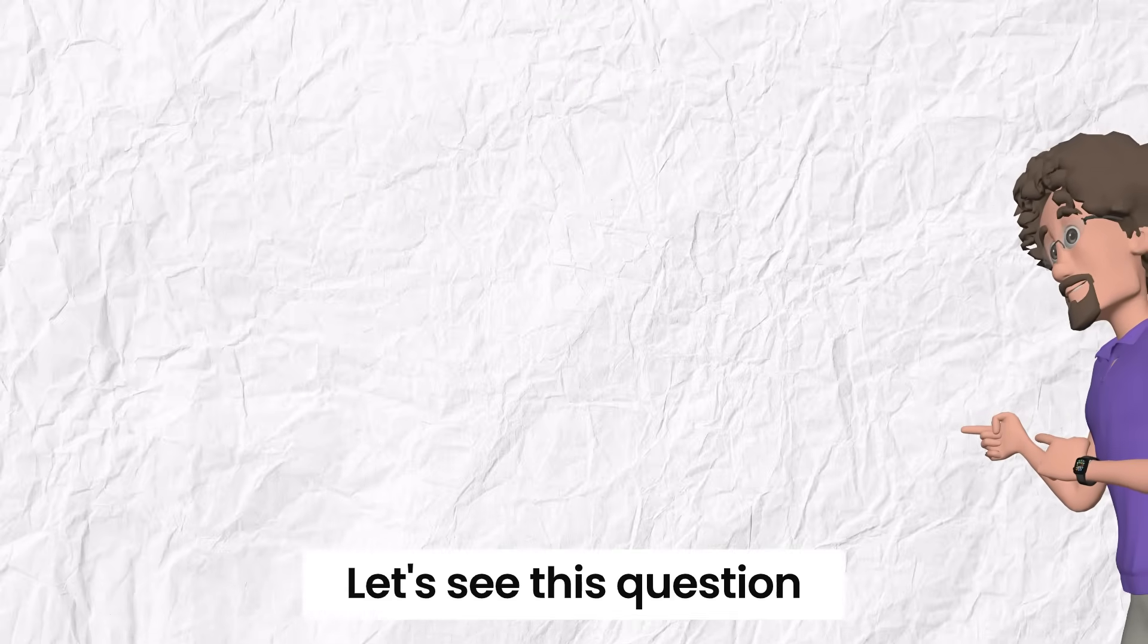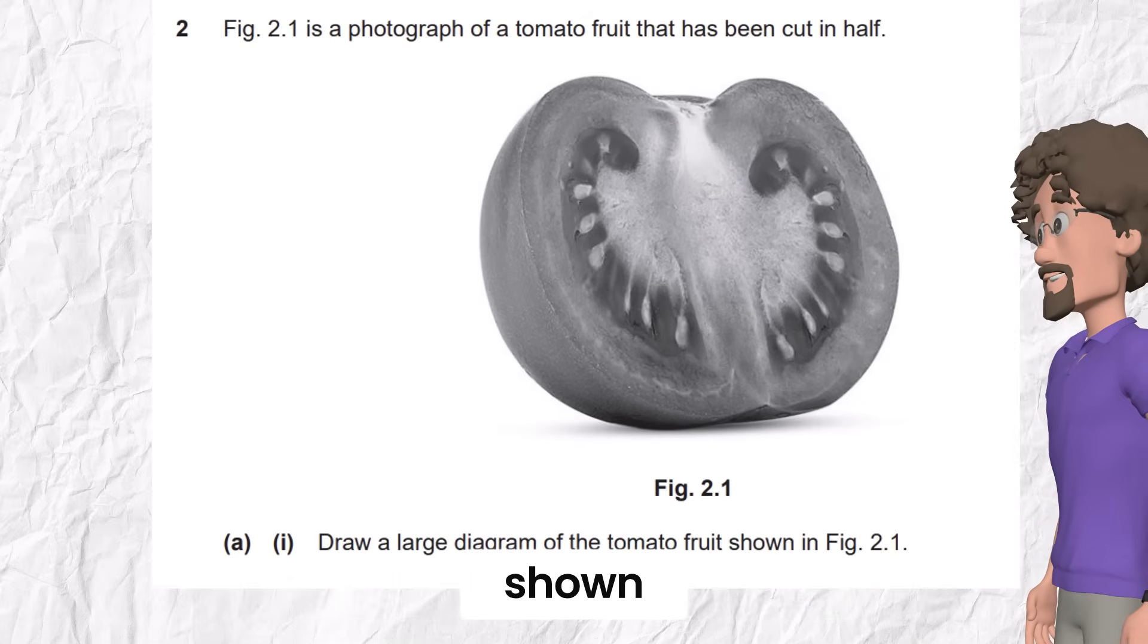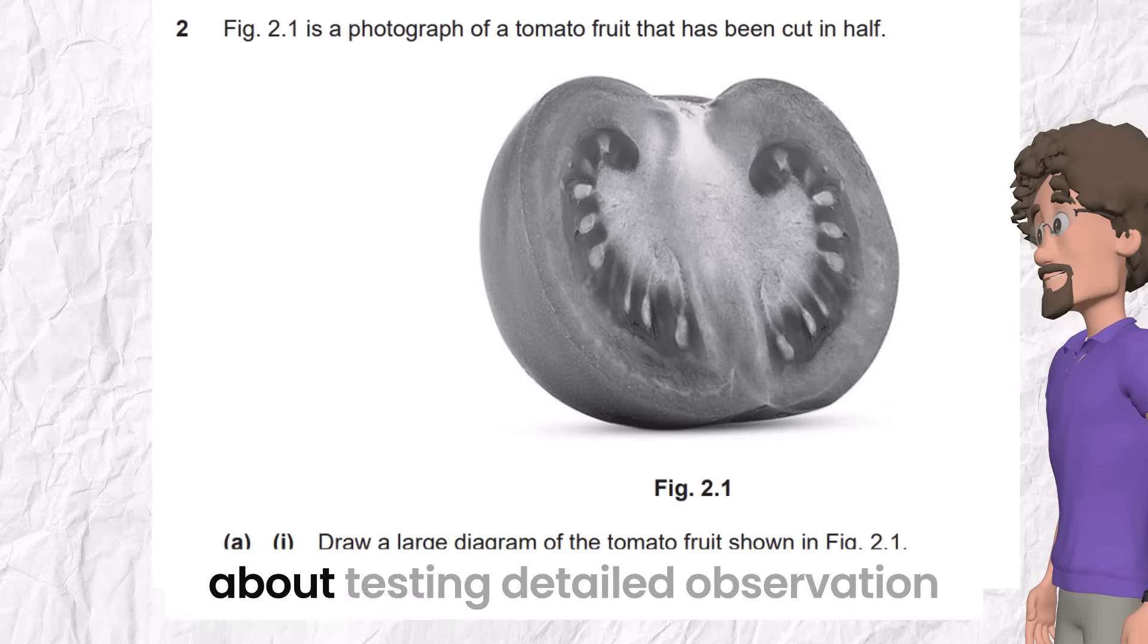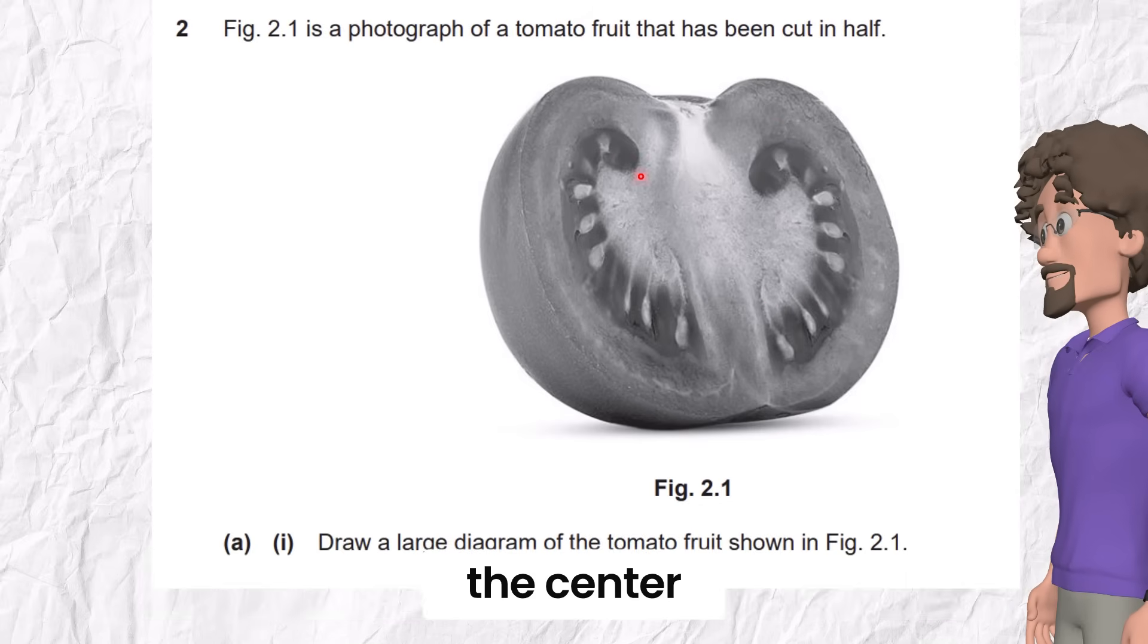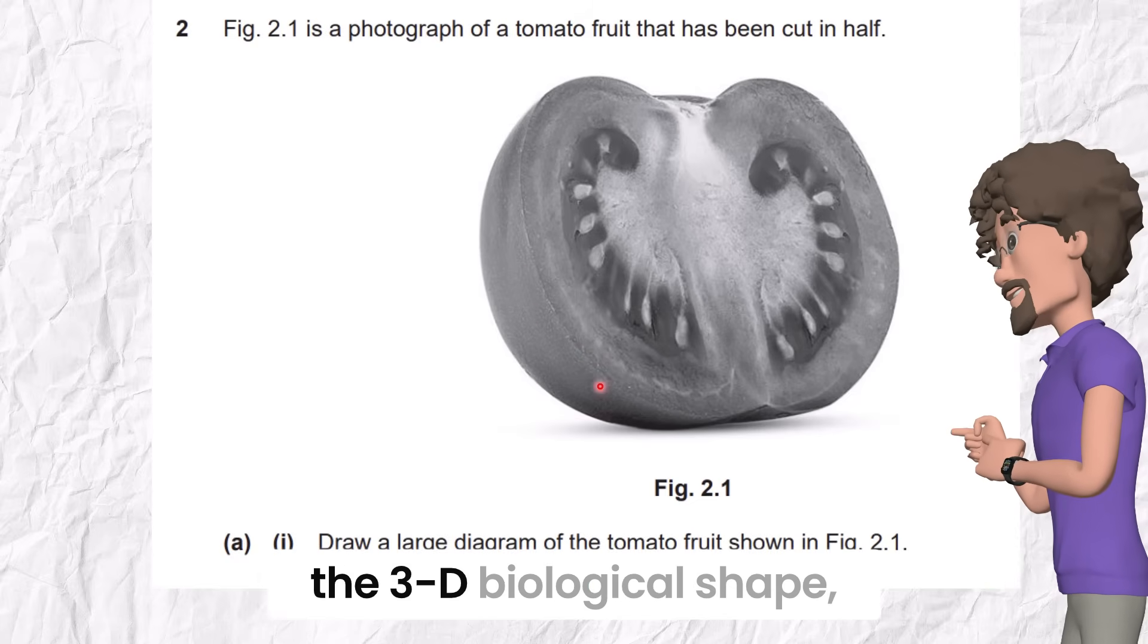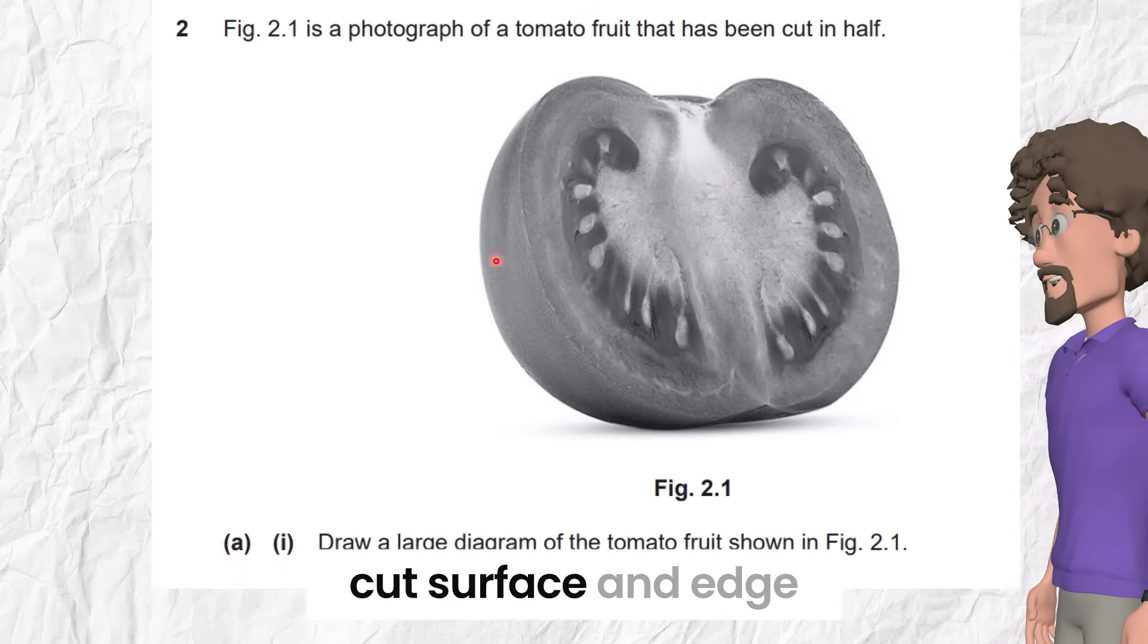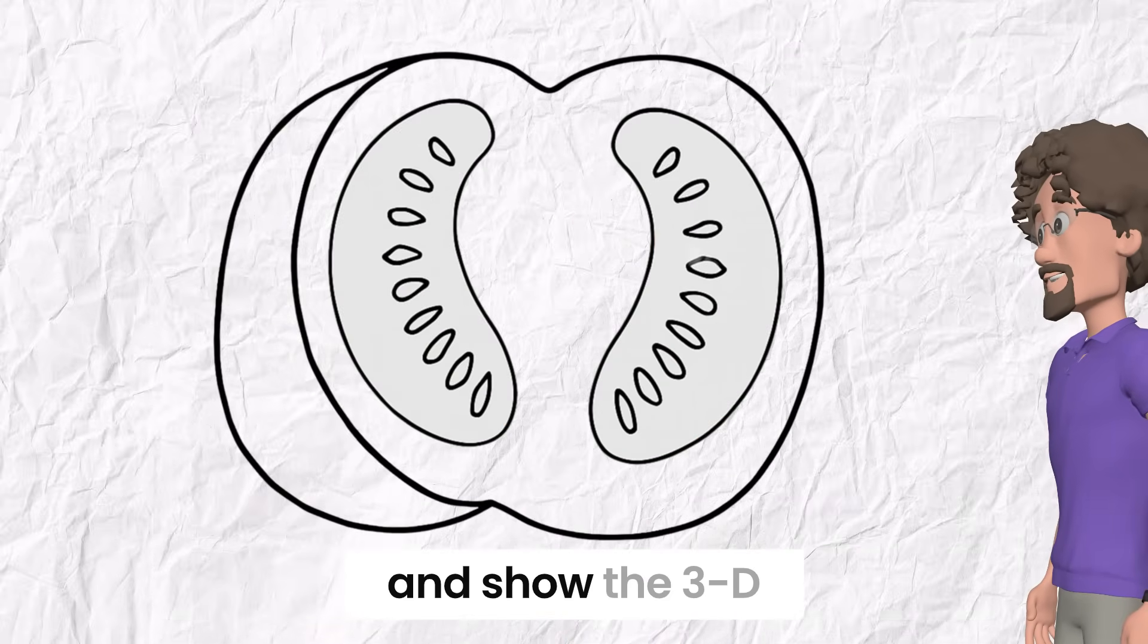Let's see this question. Here they ask to draw a large diagram of the tomato fruit shown. The first detail is about testing detailed observation. Draw six to ten seeds on each side, correctly positioned, pointing toward the center. The second detail is about testing the real depth and awareness of 3D biological shape. Cut surface and edge of fruit shown. So draw like that. Respect numbering and positioning. And show the 3D idea.